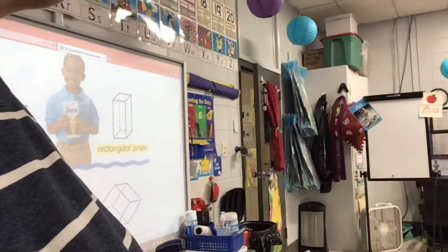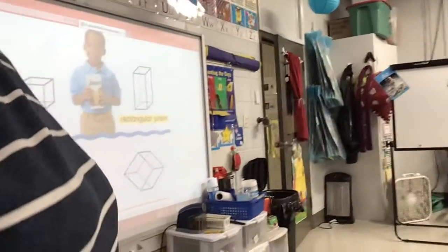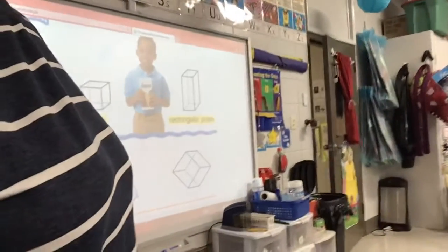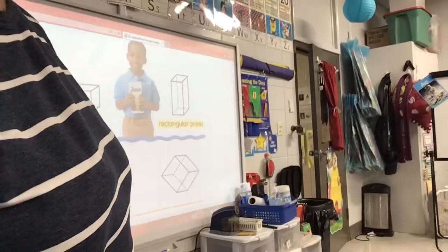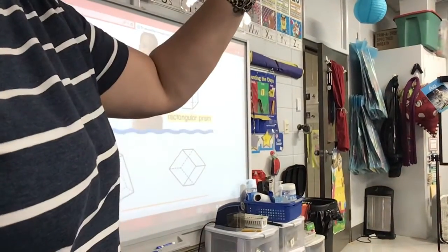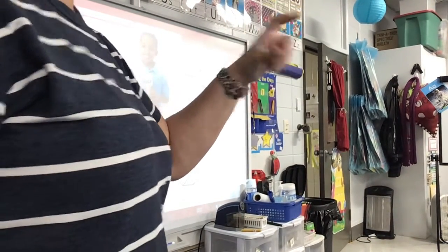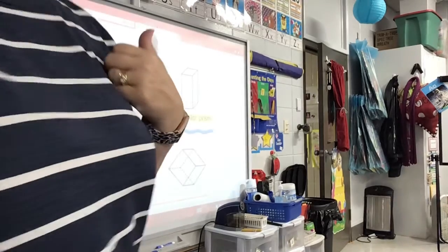Paper. Well, paper is more just a rectangle because it's flat. But if it stuck up, if you had a bunch of paper in a stack, that could be a rectangular prism.